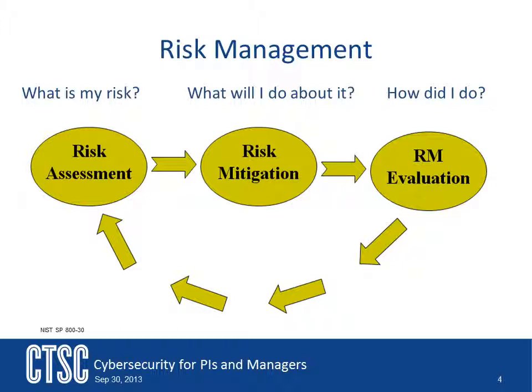The third step of the risk management process is to evaluate where things stand. You look at the risks you had assessed and determine if they are successfully being mitigated by the controls you put in place. Are all the controls you implemented really doing what they are supposed to? Are they still all needed? Did you assess the correct risks, or have the ones you thought were high priority shown that they really aren't? Have new risks arisen? This information then feeds back into performing a new risk assessment and moving through the whole process again.